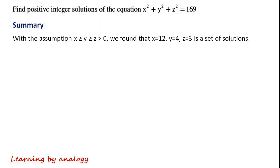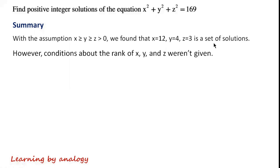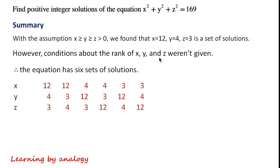In summary, with the assumption x is greater than or equal to y is greater than or equal to z is greater than 0, we found that x equals 12, y equals 4, z equals 3 is one set of solutions. However, since no ordering conditions on x, y, z were given, the equation has six sets of solutions in total.